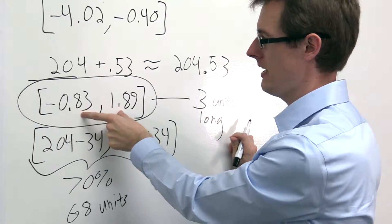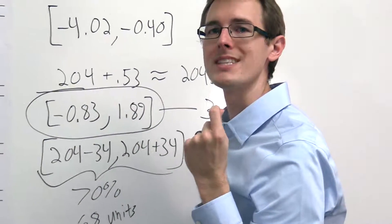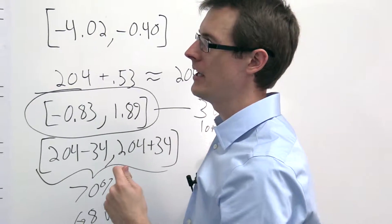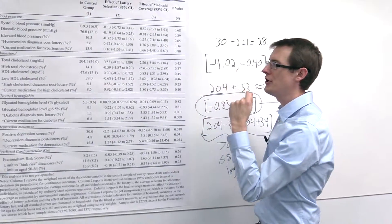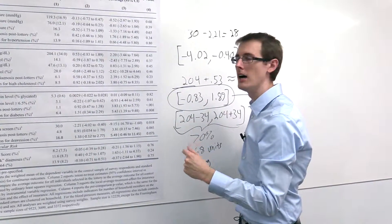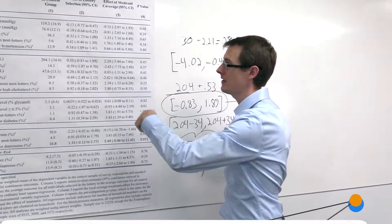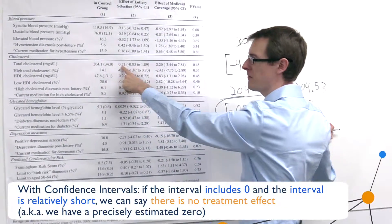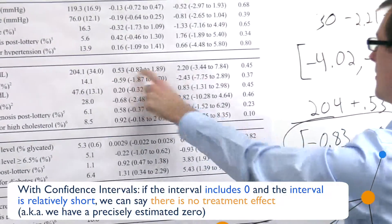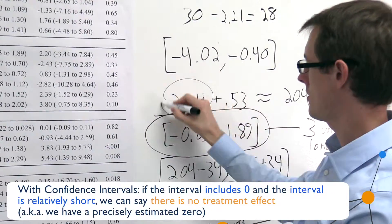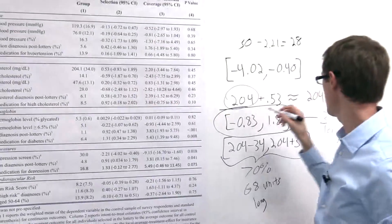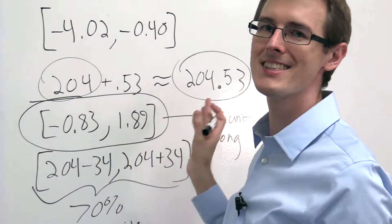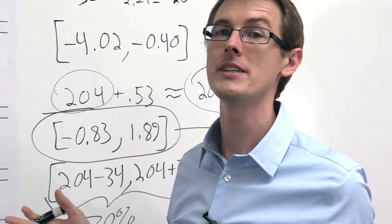So that means that this is a small interval. So what we have is something called a precisely estimated zero. So we conclude that there is no treatment effect of being in the treatment group here on total cholesterol. 0.53, that's basically zero. These two groups, 204.1 in the control group and 204.53 in the treatment group, basically the same thing. Treatment didn't matter.